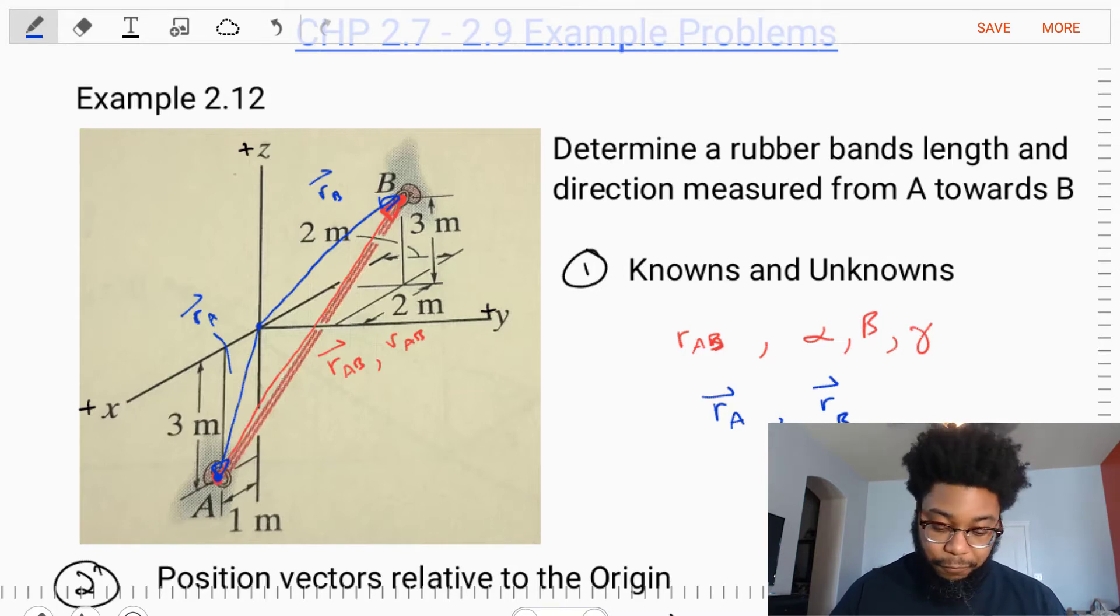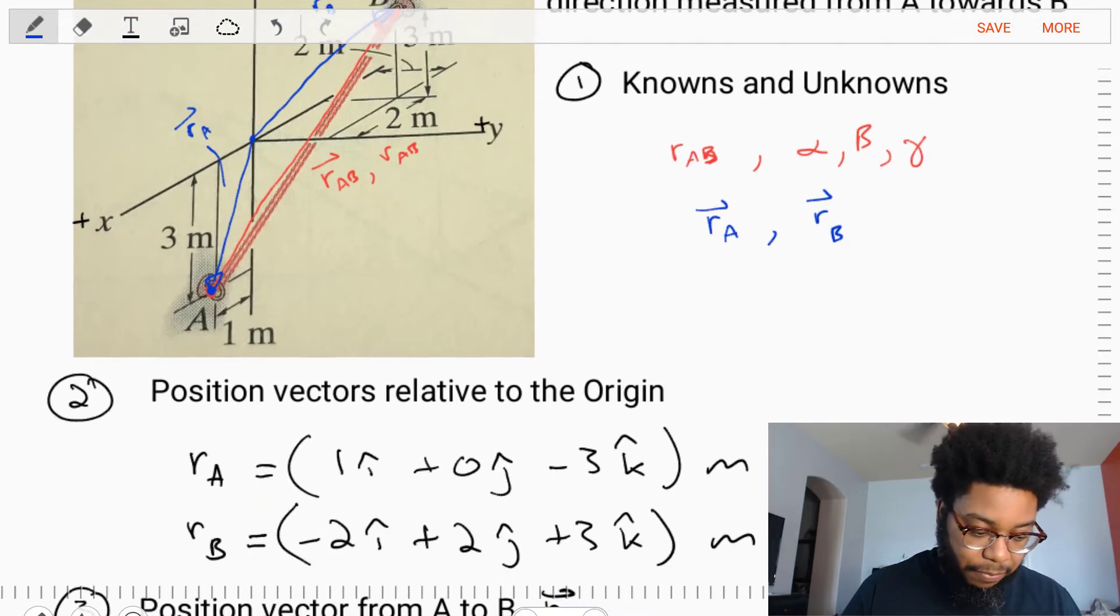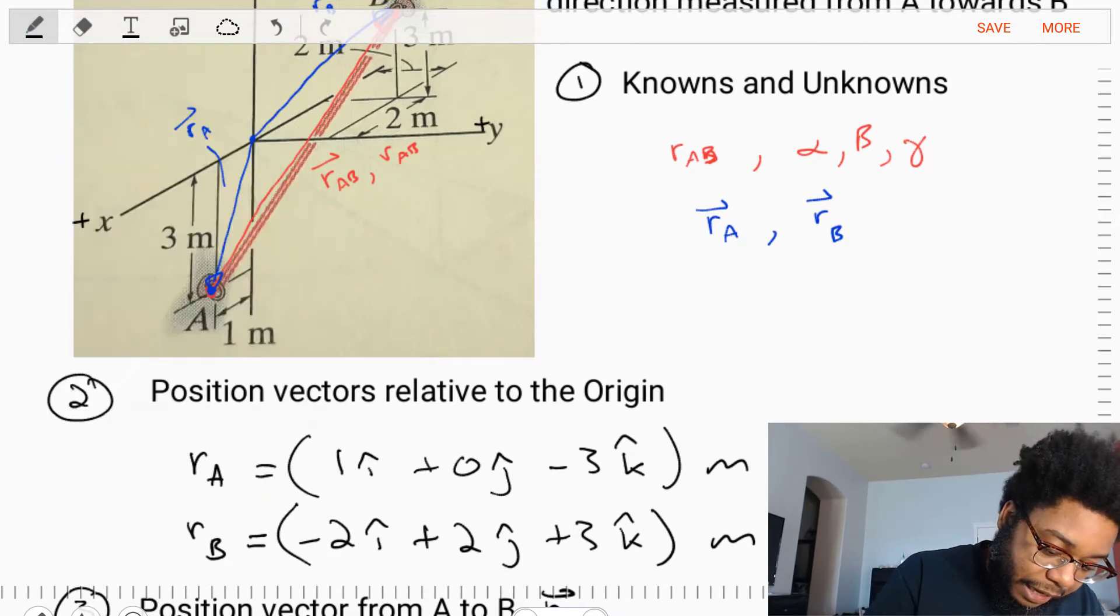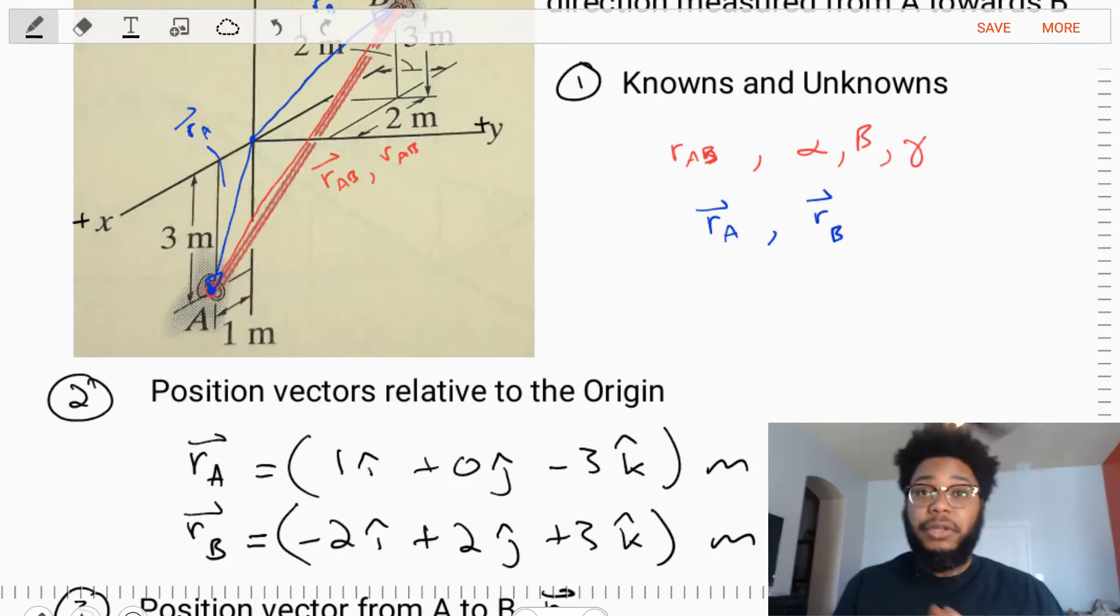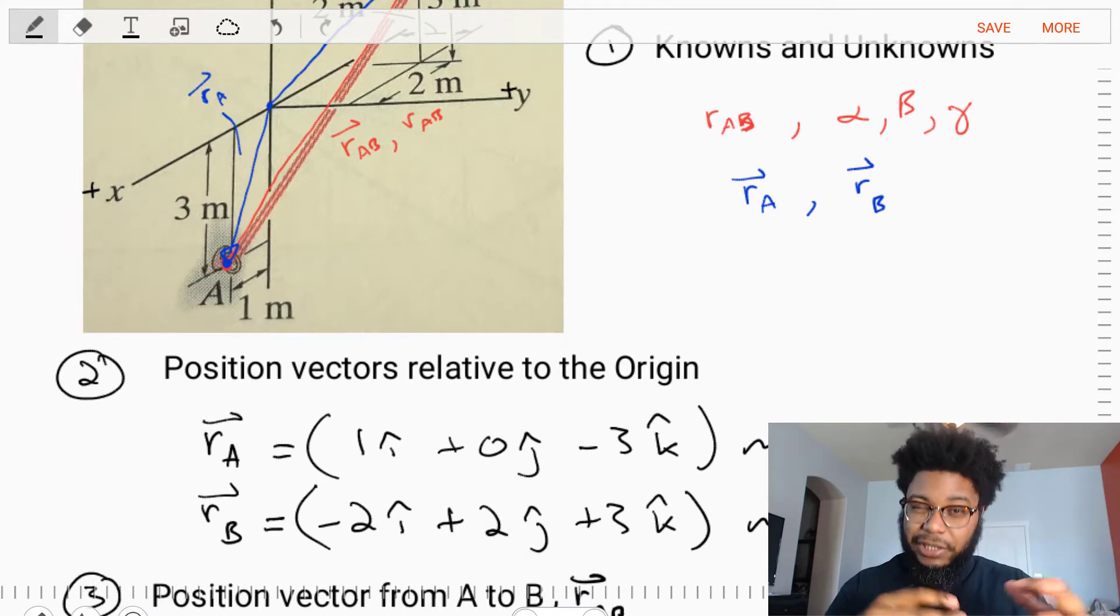The first thing we need to do is find RA and RB. We need to write those out. It all comes from looking at our diagram and identifying what is their positions on the x, y, and z coordinate system. Are those positions positive or negative? Then converting that information into a Cartesian vector.